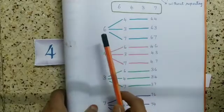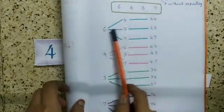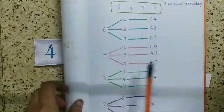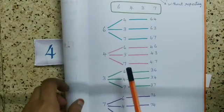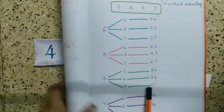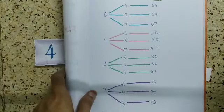You can see here, we can write like this: 64, 63, 67, 46, 43, 47, 36, 34, 37, 76, 74 and 73.